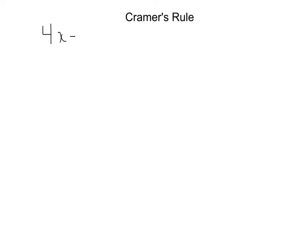What we're going to talk about in this lesson is Cramer's Rule, where we can use determinants when solving systems of equations. Up until this point we've used elimination and substitution to solve systems of equations. Now we're going to use matrices and specifically Cramer's Rule. We are given 4x minus 5y equals 39, and in our second equation 3x plus 8y equals negative 6.